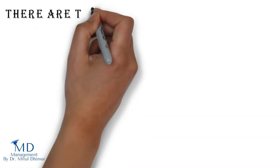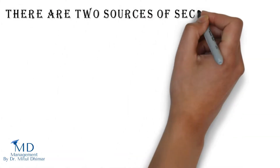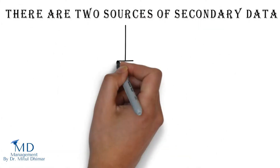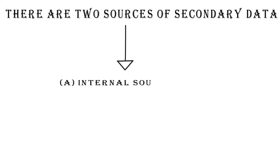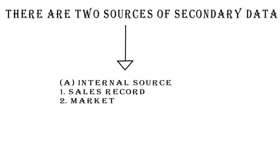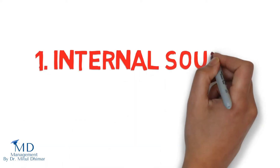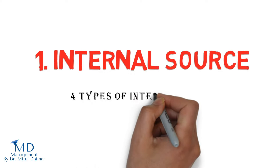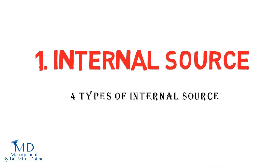There are two sources of secondary data: internal and external. Let us begin with the internal source. There are four types of internal source.